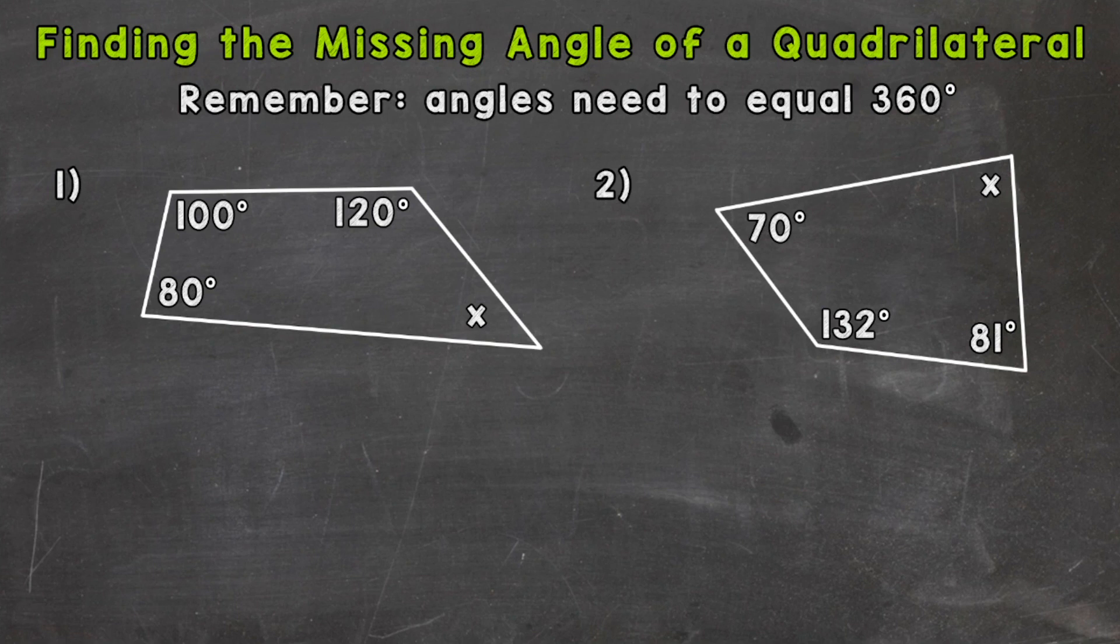Now a very important note at the top of your screen: when we're working with quadrilaterals, when you add all four angles up, it has to equal 360 degrees. No matter what type of quadrilateral or what it looks like, the magic number is 360 degrees.